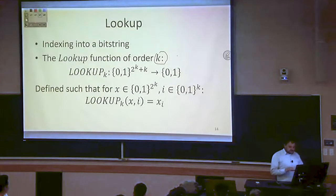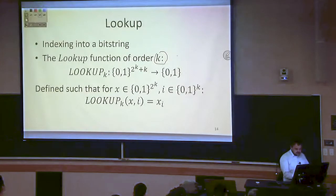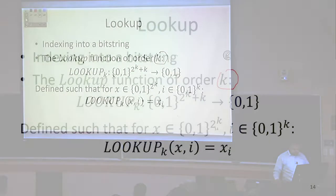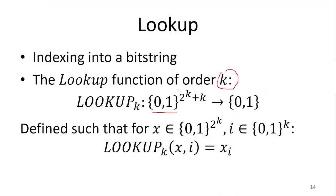The function takes a big long bit string as input. We have two components to this bit string: the string we're going to be indexing into, which is going to be of length 2 to the k, and also the index we're going to use to find the bit, which is k bits long. The subscript k matches the length of the index in bits, and our output is that one bit at the indexed location.